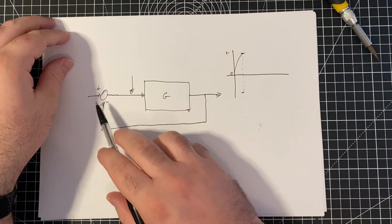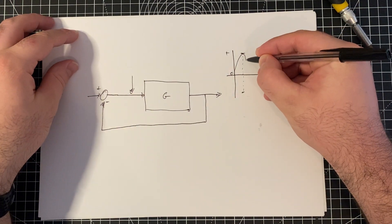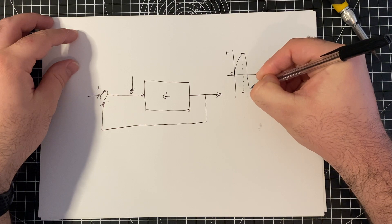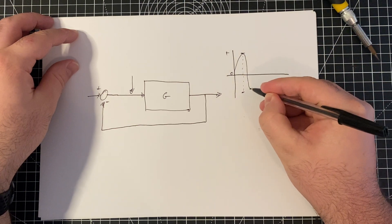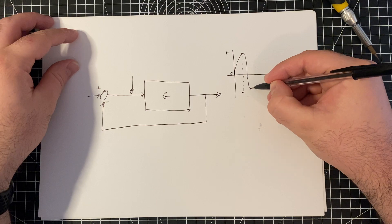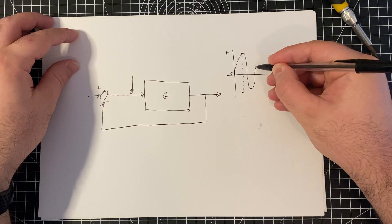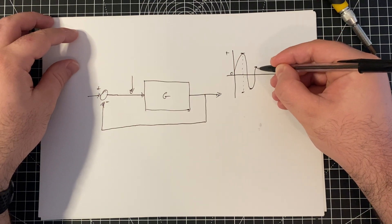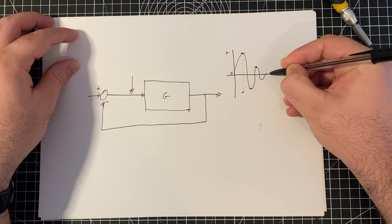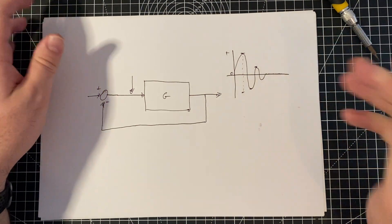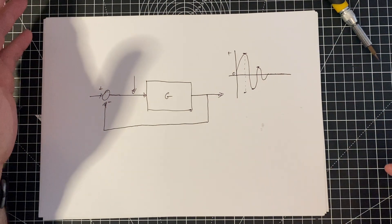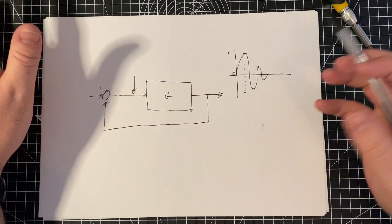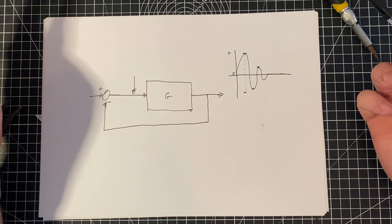And the idea with the feedback is that every time we loop around, so now we've gone negative again, we hit some value, and then we go, no, no, no, I don't want to be there, I actually want to be a bit more positive. So, it goes a bit more positive, and then it does the same thing. And the goal is that it should settle down much, much quicker than if you didn't have any feedback in it. So, that's the basic idea anyway.